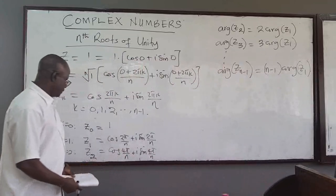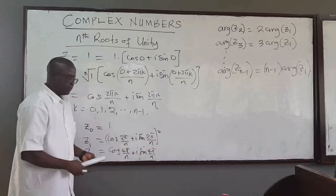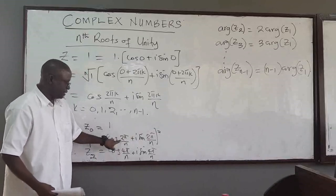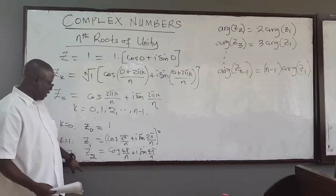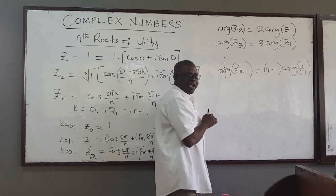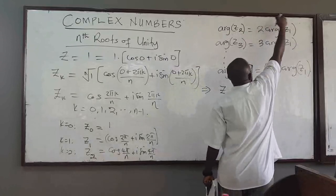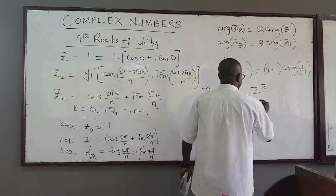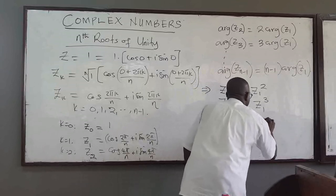Note that if we square z1 — by De Moivre's theorem we just multiply the argument by 2 — we get cos(4π/n) + i·sin(4π/n), which is the same as z2. So z2 = z1². Similarly, z3 = z1³, and in general z(n−1) = z1^(n−1). The arguments are acting like a power law variable.